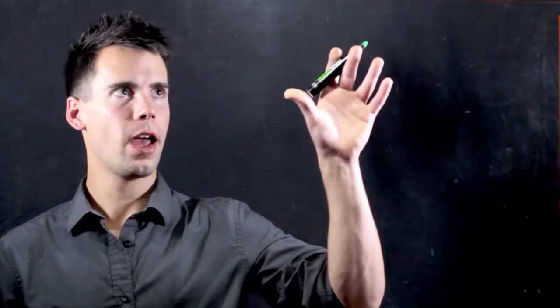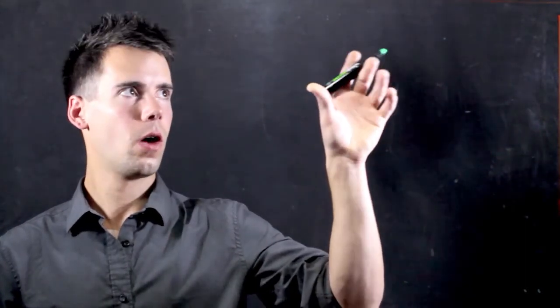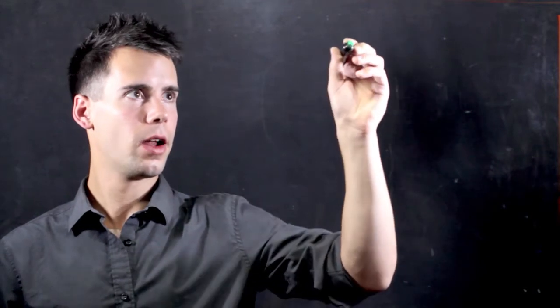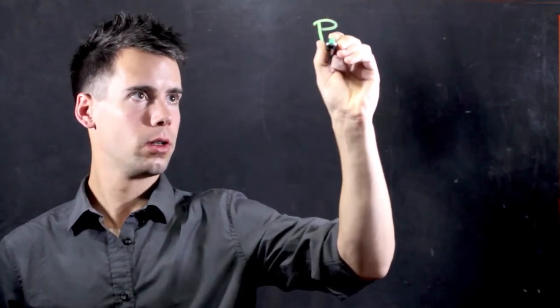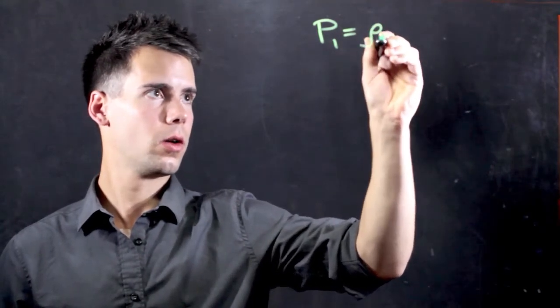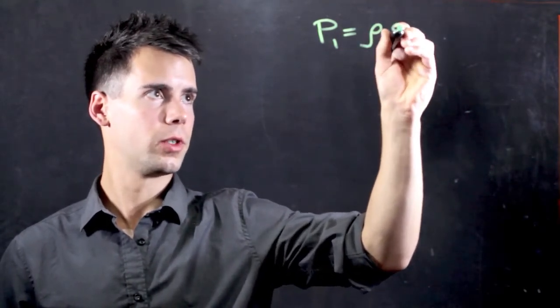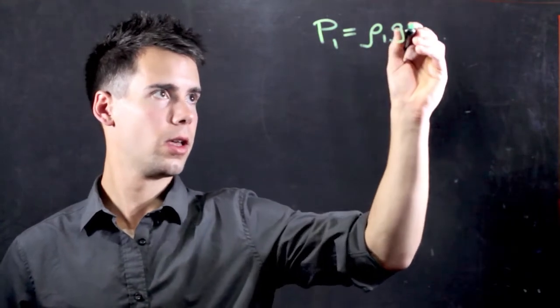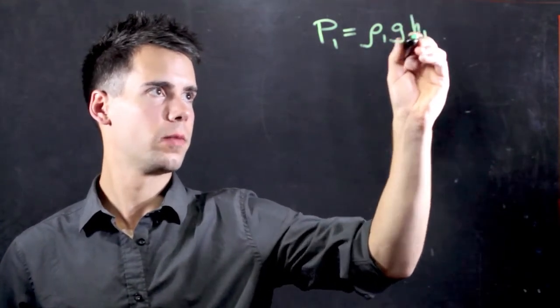Now, looking at atmospheric pressure on Mercury, we find that the pressure, P1, is equal to the density of Mercury times the gravitational acceleration times the height that it's displaced.